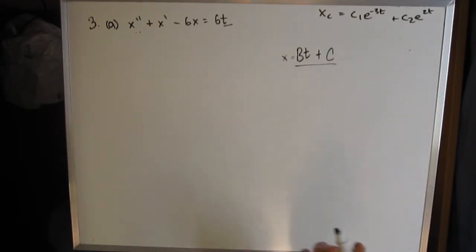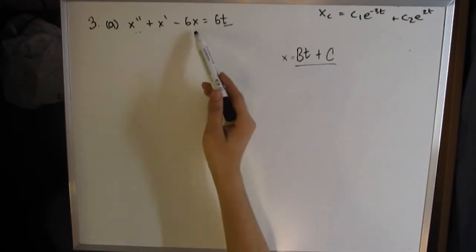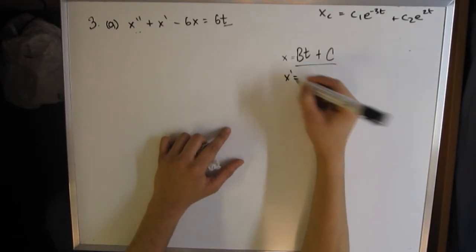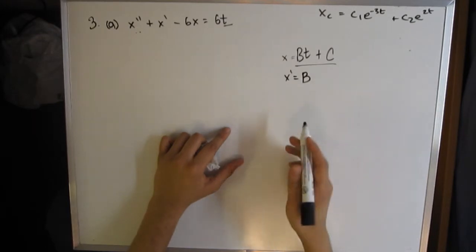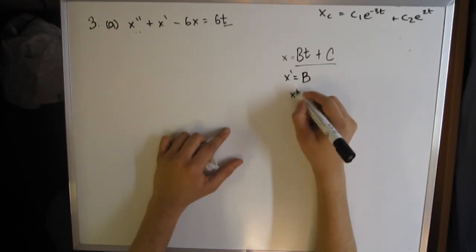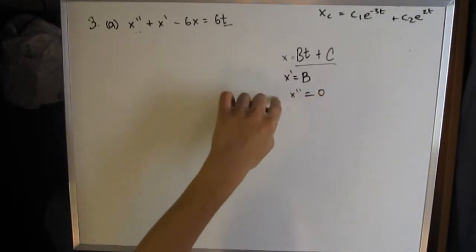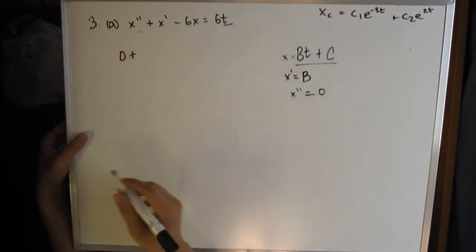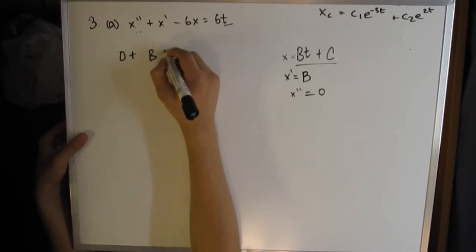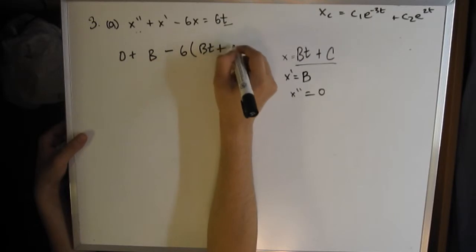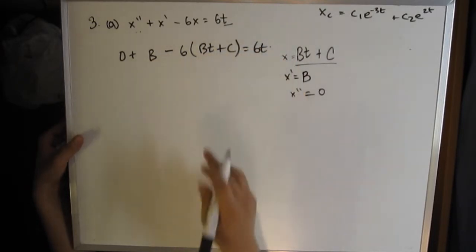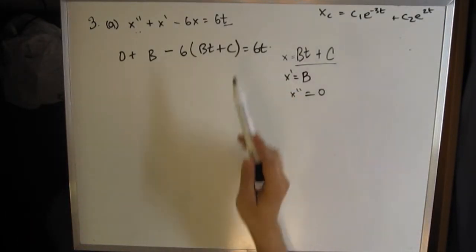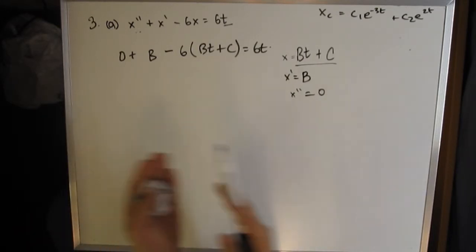By making this assumption, we have to substitute this value into x, x', x''. So we first find the derivative of x. The first derivative of x would be b, and the second derivative would be 0. Now we're going to substitute all three of these into the equation.